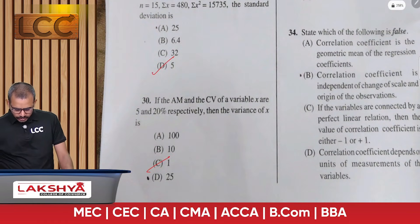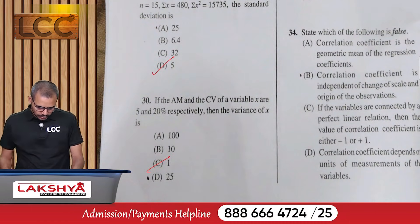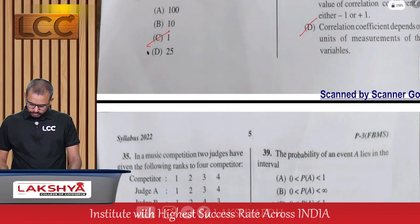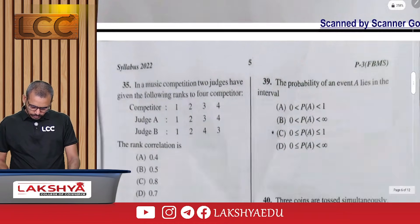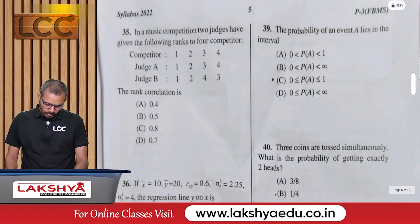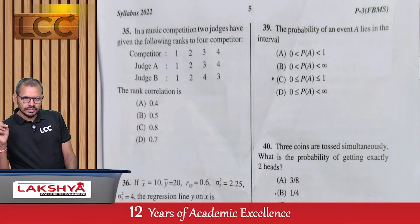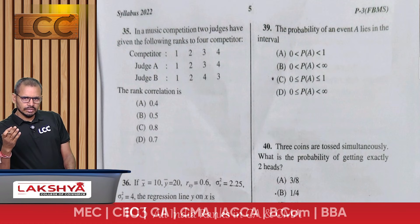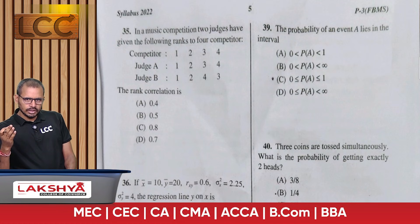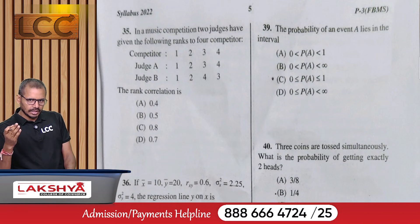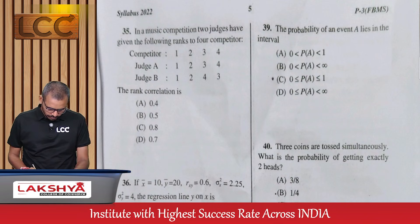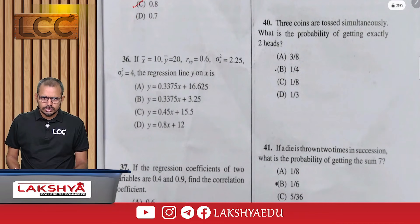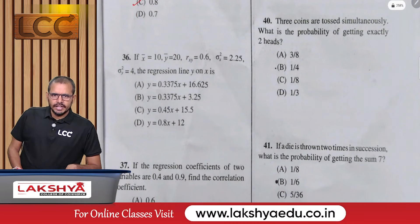Question 34: Which of the following statements is false — option D. Question 35: In a music competition, two judges give ranks A and B as 1, 2, 3, 4 and 1, 2, 3, 4 respectively. Find the rank correlation — option C.